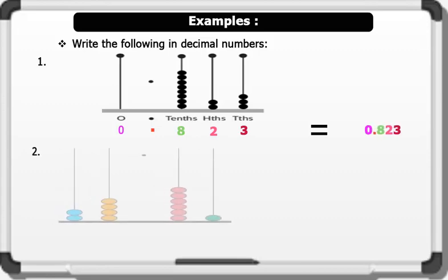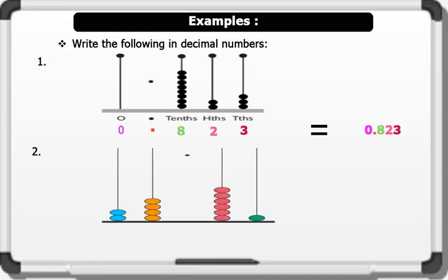Example 2 — see the image on the board. Let's count together: 2 is placed in the tens column. 4 is placed in the ones column. We bring down the decimal point. 6 is placed in the tenths column. And 1 is placed in the hundredths column. This gives us 24.61 in decimal.